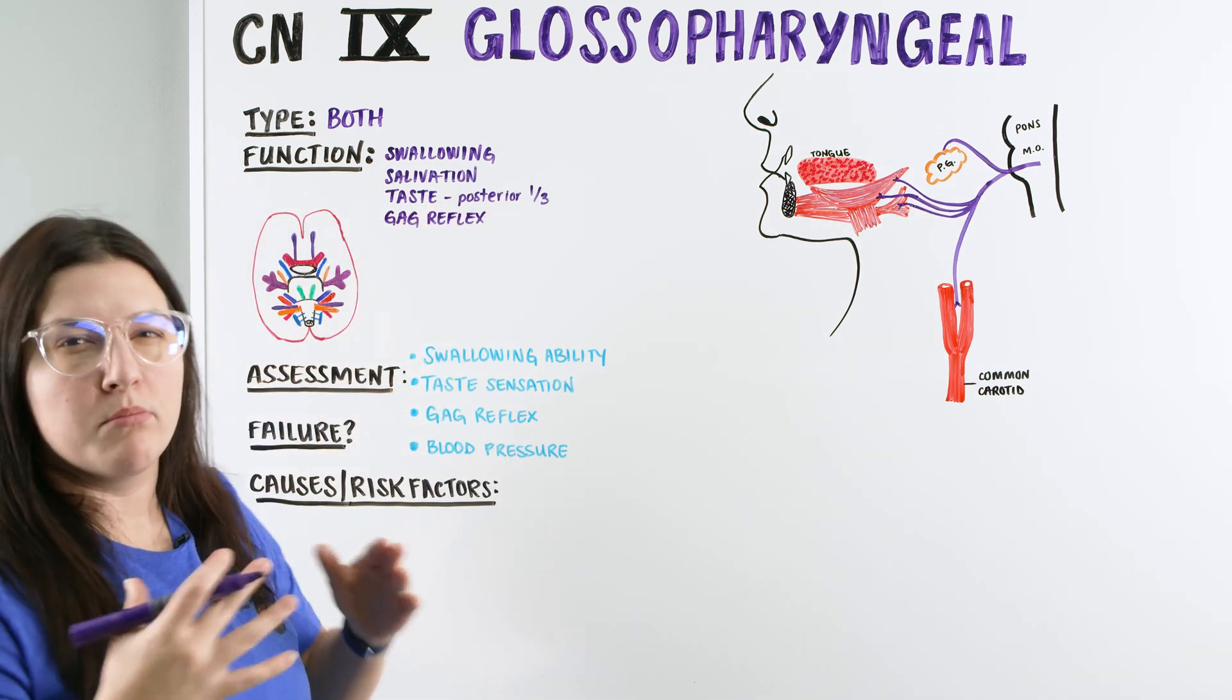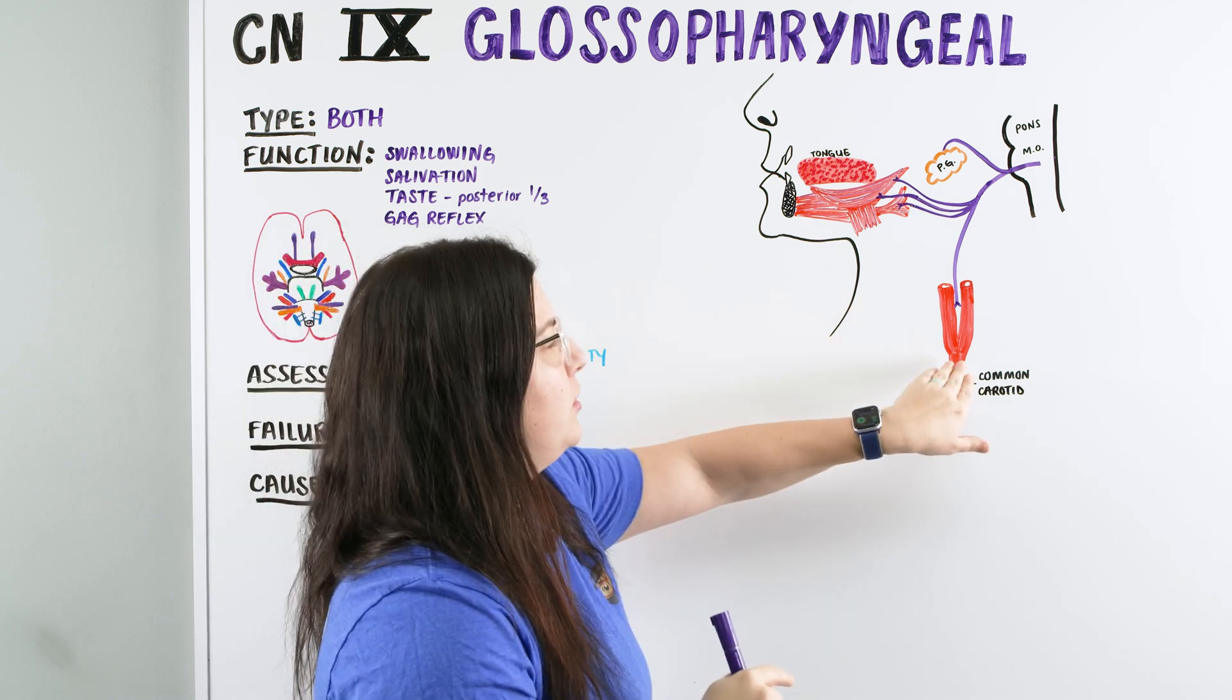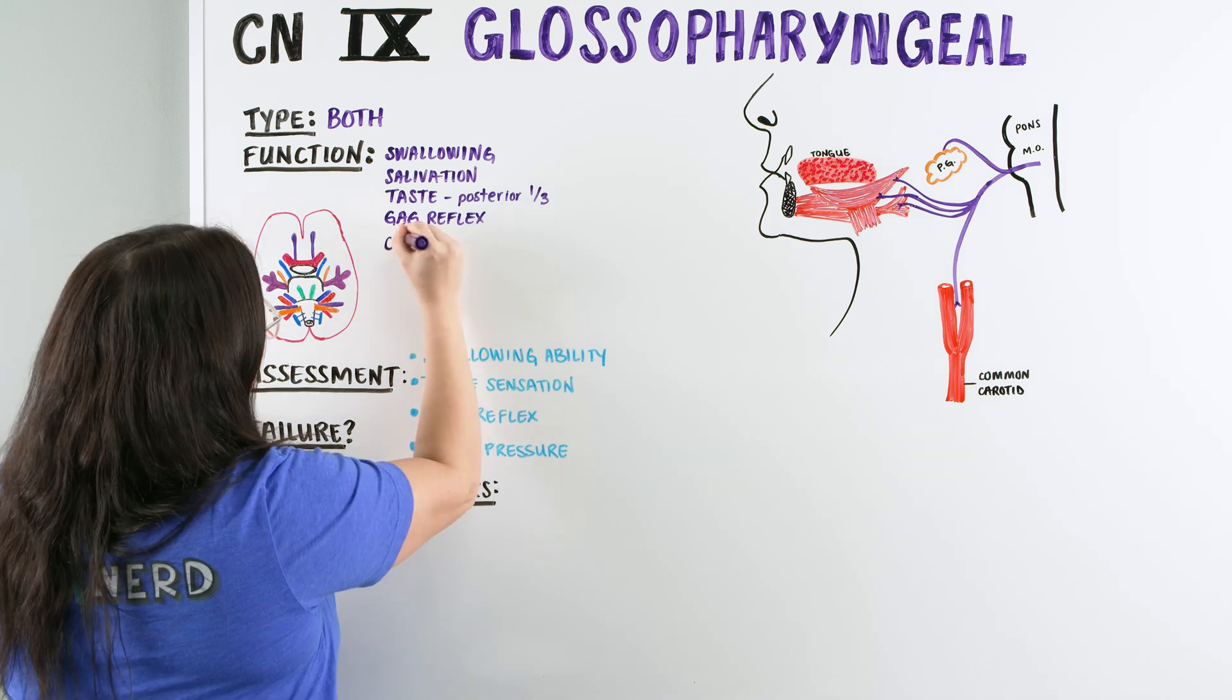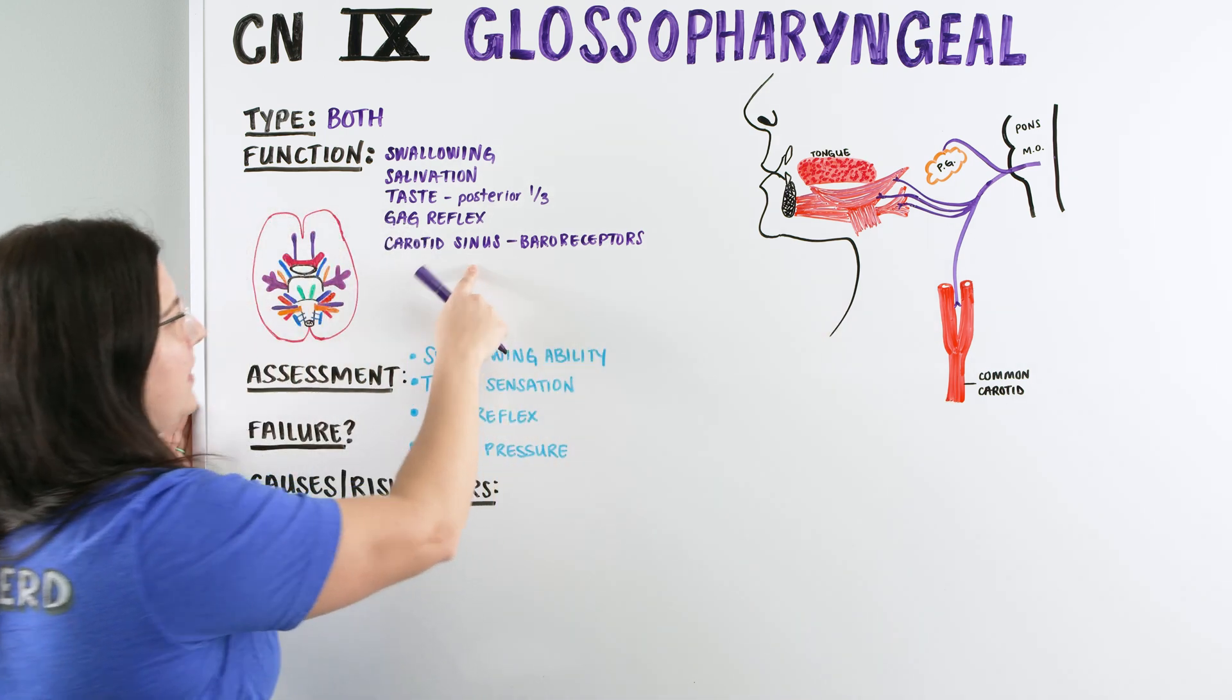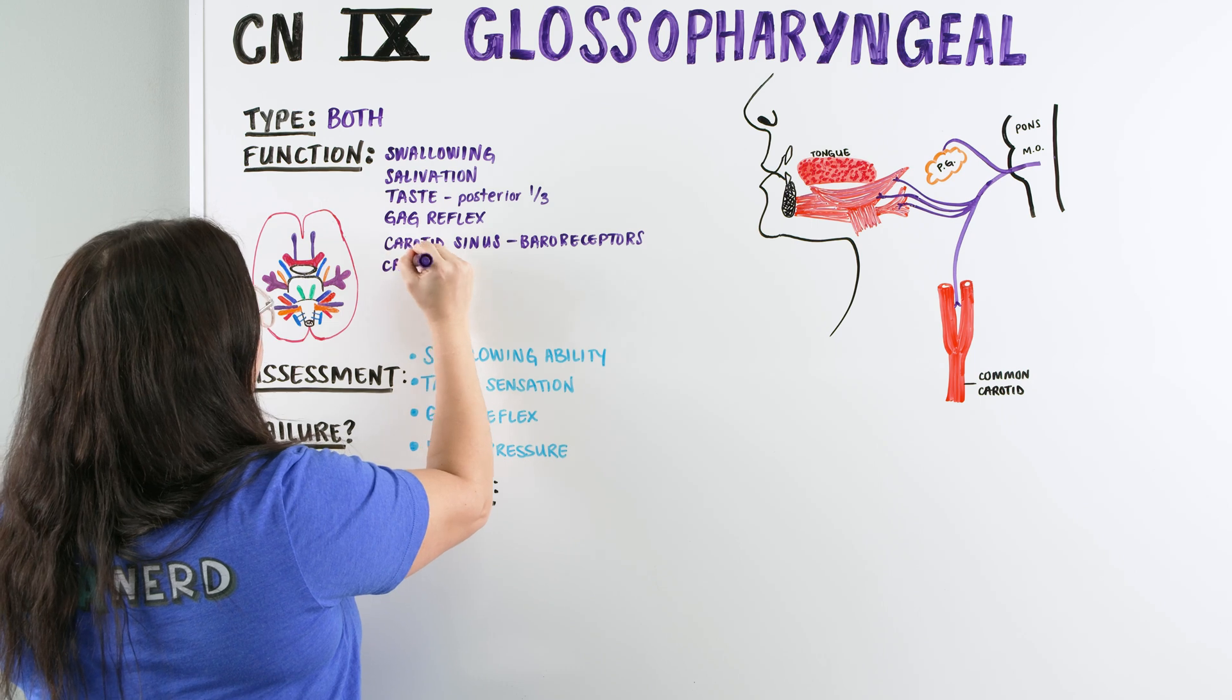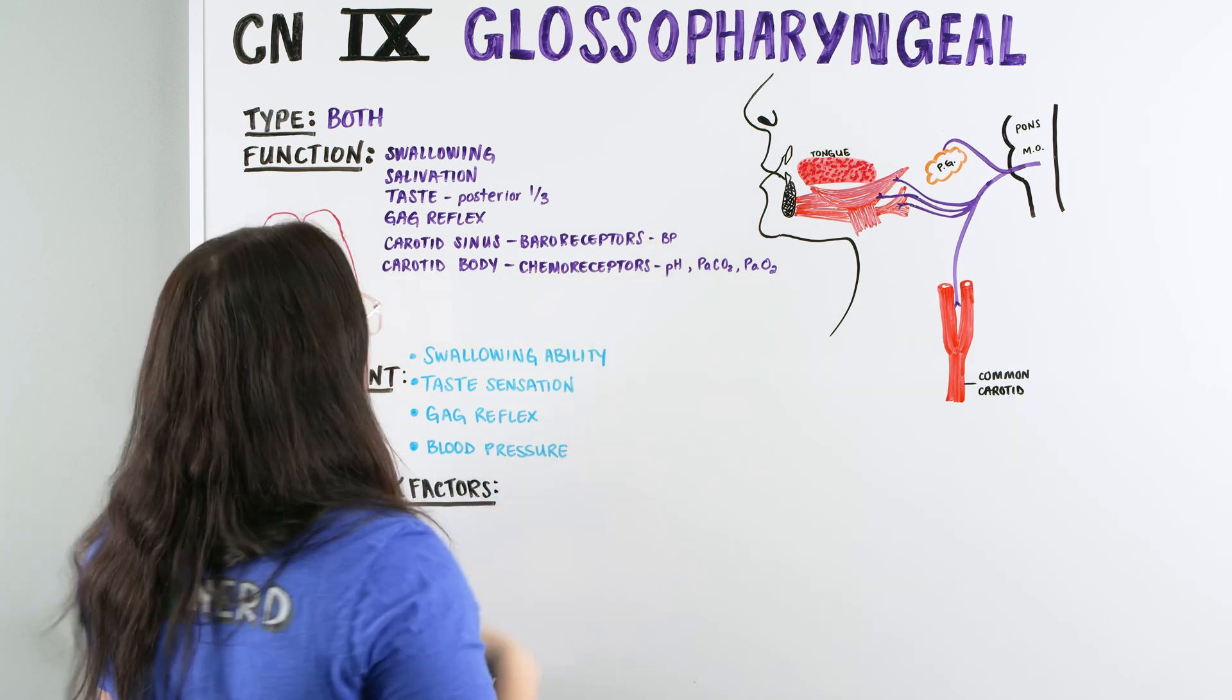So now that we've mentioned here most of the motor components, we also have components that have to do with our sensory portion. The first one is going to be down here, the carotid sinus. And the carotid sinus has baroreceptors, baroreceptors that we use to help regulate our pressure, our blood pressure within our body. And along with baroreceptors within the carotid area, within our carotid body, we have our chemoreceptors. And what do our chemoreceptors do? Chemoreceptors help us find out what the pH is, what the oxygen level is, what the CO2 level is within our blood.